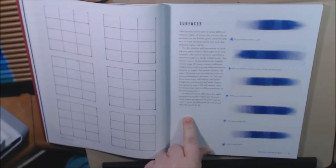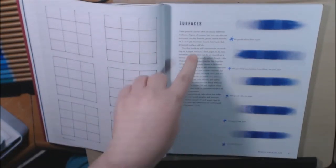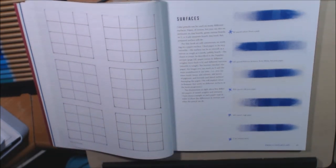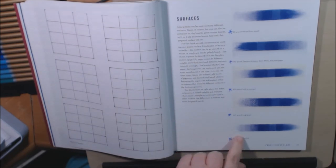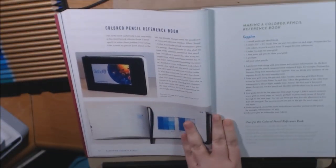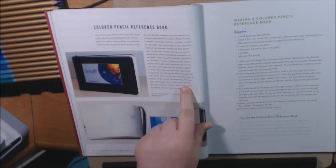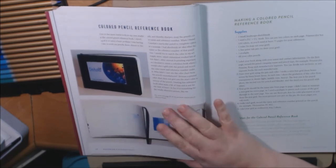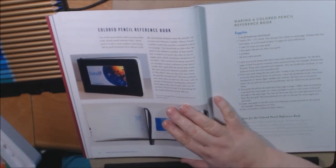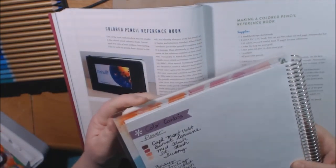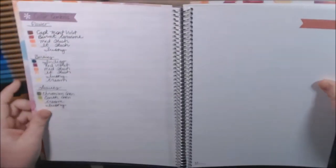And this is surfaces, what all the pencils look like on different types of paper. We've got 90 pound, 140 pound, 300 pound, 140 pound rough paper, and two-ply museum board. You can see the texture and quality of each one of these. So you can choose what you want. This one is making a reference book. I have one, too. But, I call mine a swatch book. As many of you do.